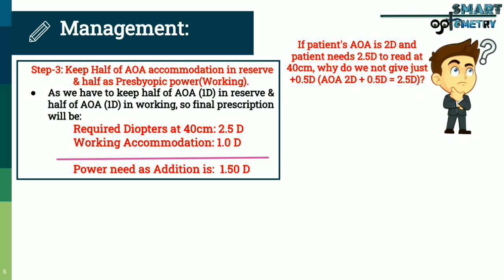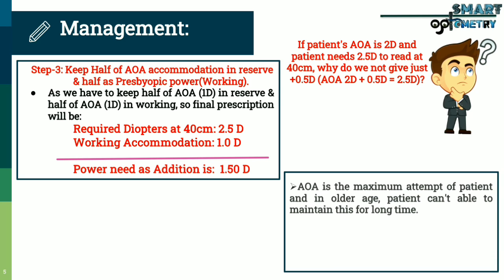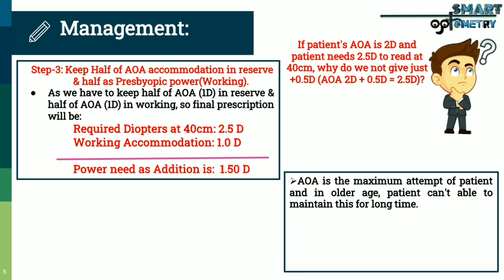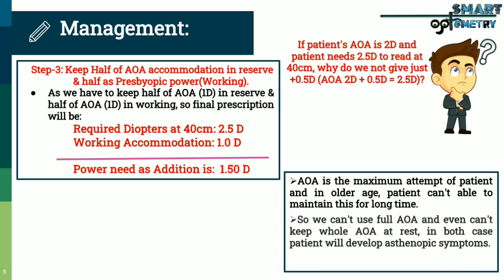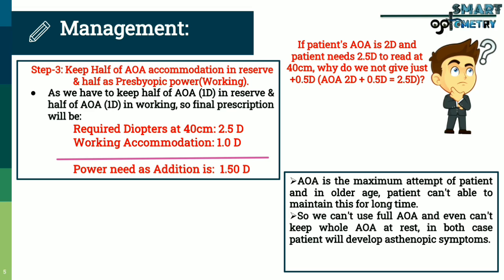One question may come to your mind: if the patient's amplitude of accommodation is 2 diopters and the patient needs 2.5 diopters to read at 40 cm, why do we not just give 0.5 diopters? Amplitude of accommodation is the maximum effort of the patient, and in older age the patient cannot maintain this for a long time. So we cannot use the full amplitude of accommodation, and we also cannot keep the whole amplitude of accommodation at rest. In both cases, the patient will develop asthenopic symptoms. That is why we keep half of amplitude of accommodation at rest and half in work.